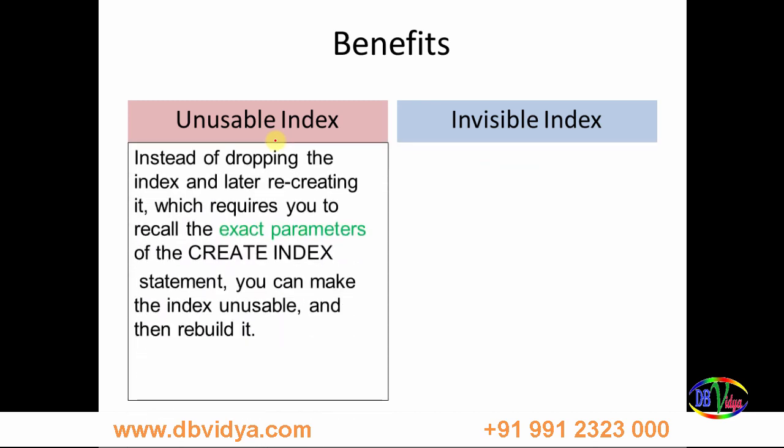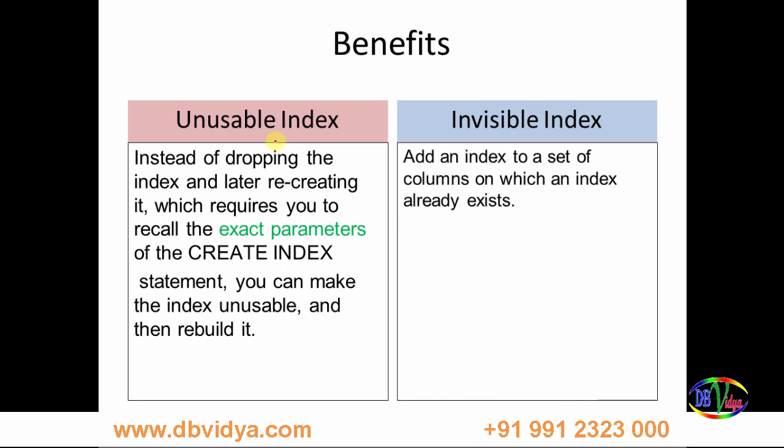One more benefit of unusable indexes: instead of dropping the index and later recreating it — which requires you to recall the exact parameters for the CREATE INDEX statement — previously the practice was to drop the index before load and recreate it afterward with the same parameters. Instead, you can simply mark it unusable. Additionally, you can add an invisible index to a set of columns on which an index already exists. For example, if you have a B-tree index on a column, you can also create a bitmap index as an invisible index on the same column.